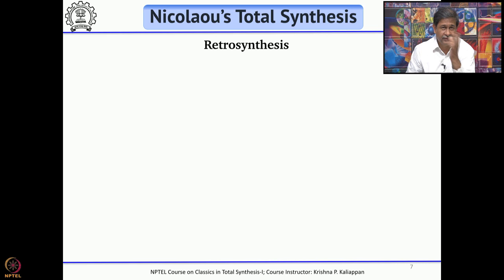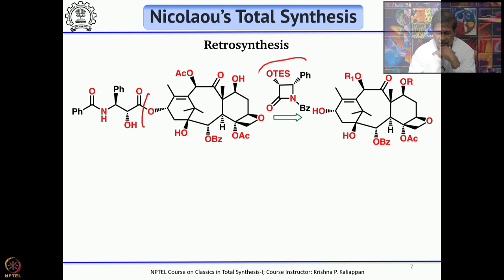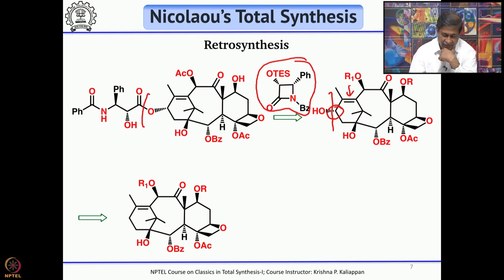Let us see how Nicolaou thought about making this molecule. First in retrosynthesis, you remove the side chain — that is the easiest step — keep it for later attachment. Next, you break the C–O bond, because once you have the double bond you can do allylic oxidation to get the hydroxyl group, reducing the oxygen functionality. This gives the target intermediate, which could be obtained from a cyclic carbonate.